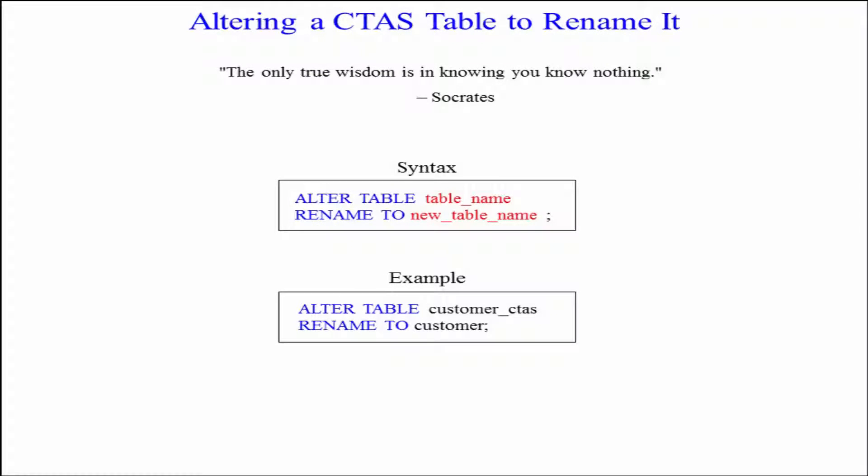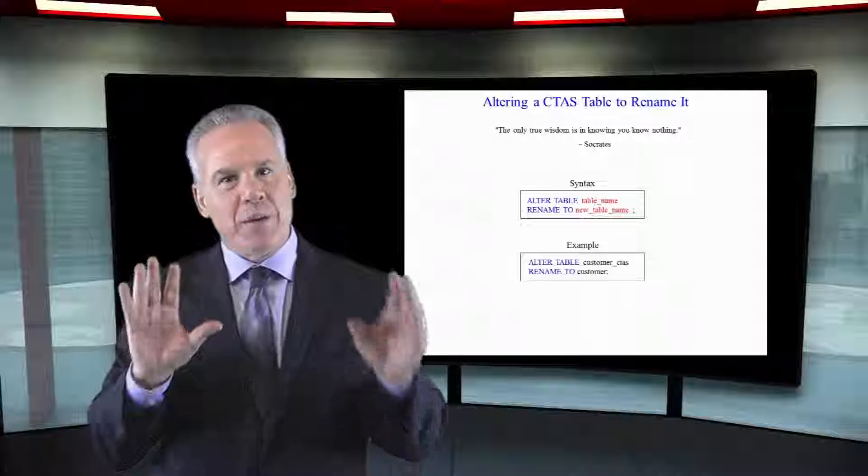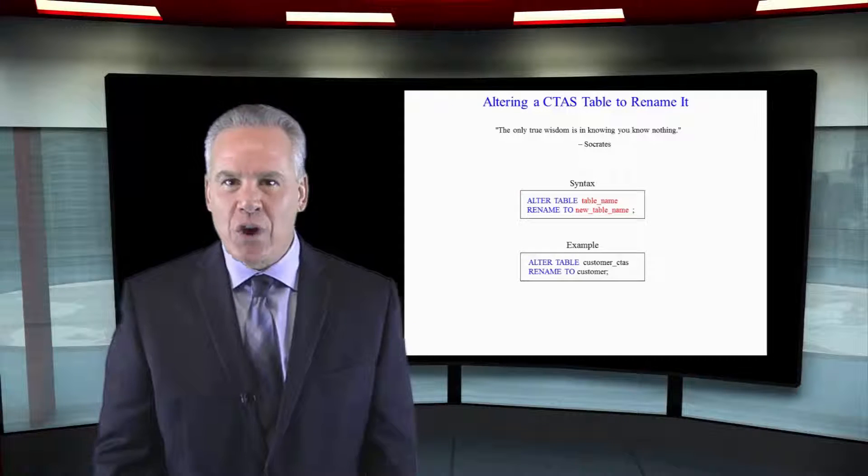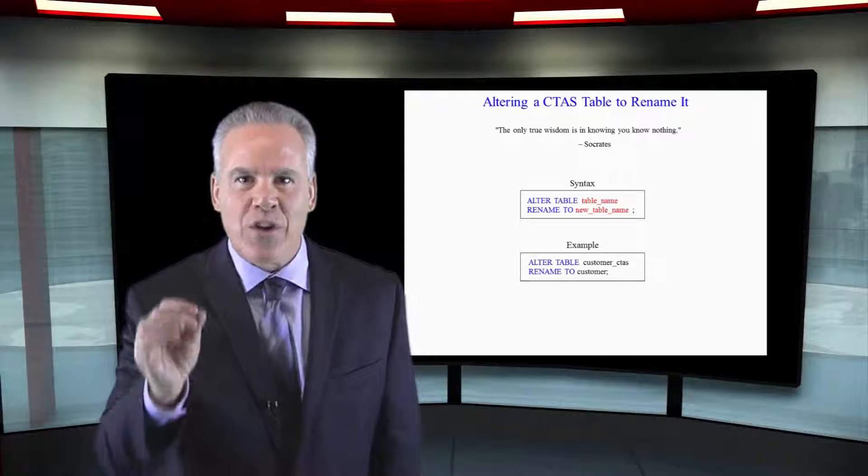You're the DBA. You've just created a CTOS table, either to give it a better distribution key, or a better co-location distribution key for your joins, or a better sort order, which we'll see here in the future. But now, you want this to be the production table. So, you alter the table, and you can rename it.